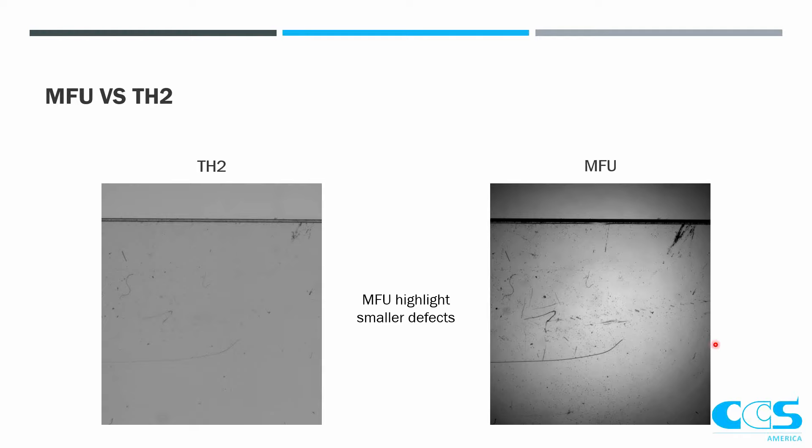Here's a quick example showing the difference between these two types of lights. The TH2 on the left with no LC film — just your standard backlight — shows the defects you would be able to see. Versus the MFU on the right is the collimated backlight, and you can see a lot finer detail. The detail you can see with the TH2 has a lot more contrast, so it's a very different image that you get.